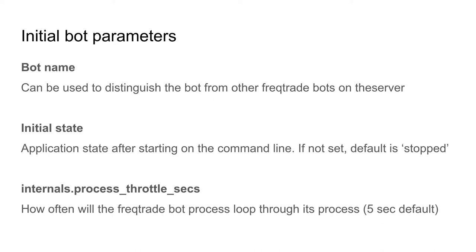The process throttle parameter determines how much the FreqTrade process will consume from your computer's CPU. If you set this to one second, the bot will consume more CPU power and have a higher load on your computer. If you set the bot to a lower frequency, the load might be lower but the bot will be less responsive. If you have a Raspberry Pi with a lot of processes running, you can give the bot lesser priority so it consumes less CPU power — otherwise, just leave it as it is.